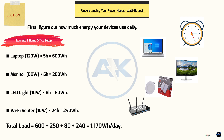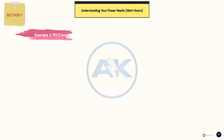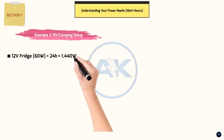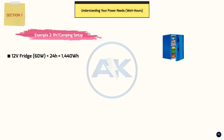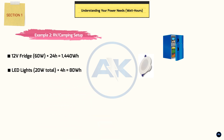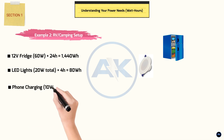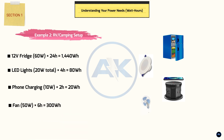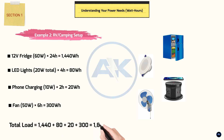Example 2: RV camping setup. 12-volt fridge: 60 watts × 24 hours = 1,440 watt-hours. LED lights: 20 watts total × 4 hours = 80 watt-hours. Phone charging: 10 watts × 2 hours = 20 watt-hours. Fan: 50 watts × 6 hours = 300 watt-hours. Total: 1,440 + 80 + 20 + 300 = 1,840 watt-hours per day.